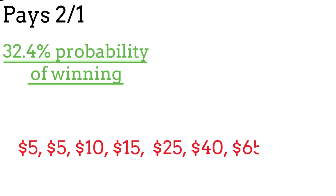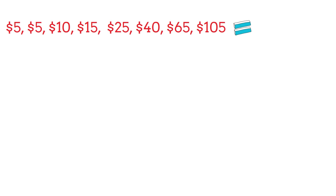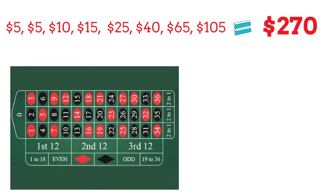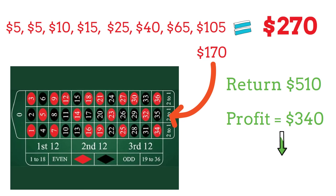So following the Fibonacci sequence, our bet wages look like this: $5, $5, $10, $15, $25, $40, $65, $105, giving us a total loss of $270. Following the Fibonacci strategy, our next bet is $170. Winning this bet would return $510, giving us a $340 profit on that spin and therefore a $70 profit on the entire sequence.